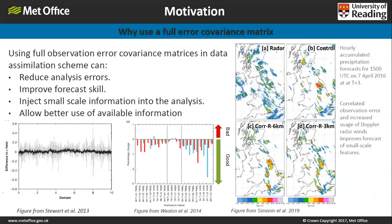Technical challenges in using a full R matrix definitely still exist — using both inter-channel and spatial correlations simultaneously remains unsolved. But why are we persevering? There is a lot to be gained from using a full error covariance matrix. Figures from papers over the last ten years show, for example, how we can reduce analysis error by incorporating a full R matrix: from Stuart et al., for the shallow water equations, assuming diagonal R produces large analysis error, whereas including the full R matrix reduces that error substantially.